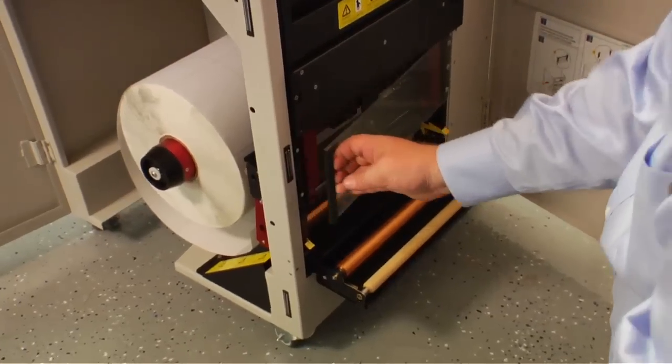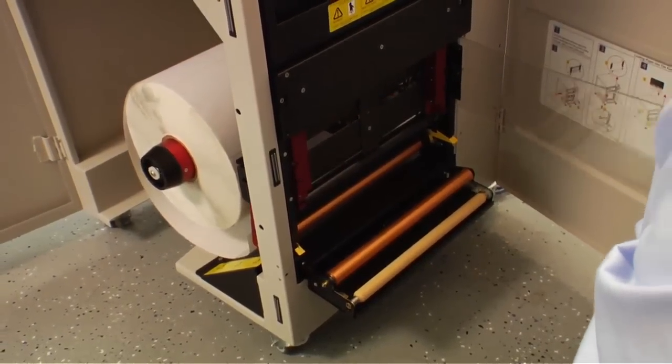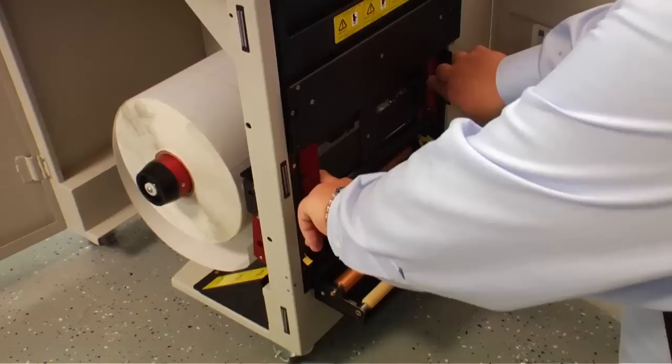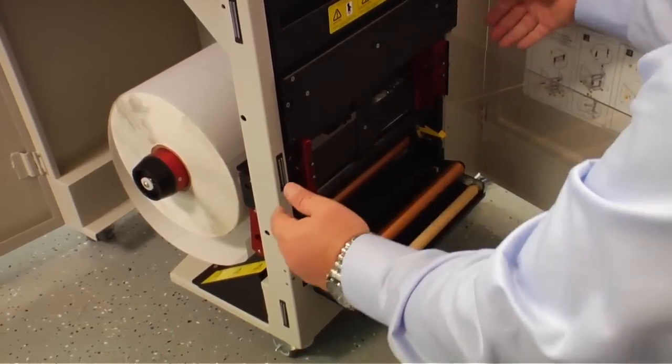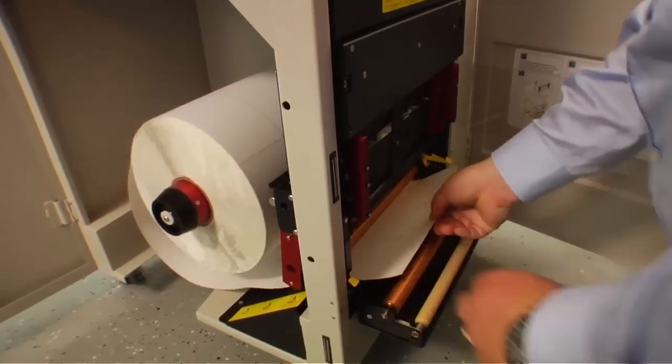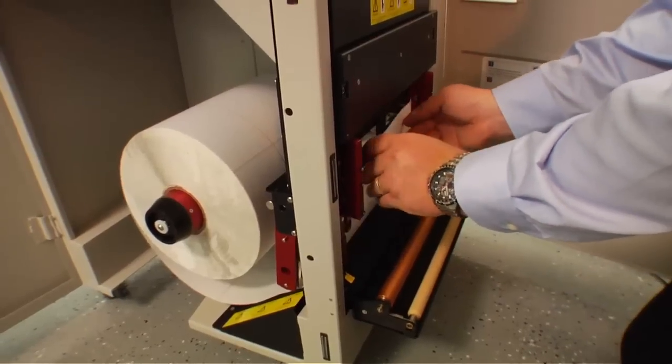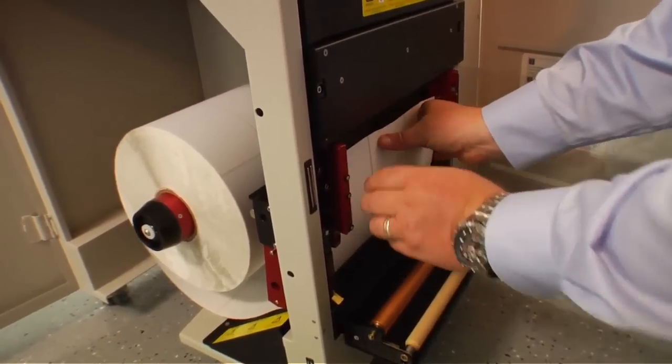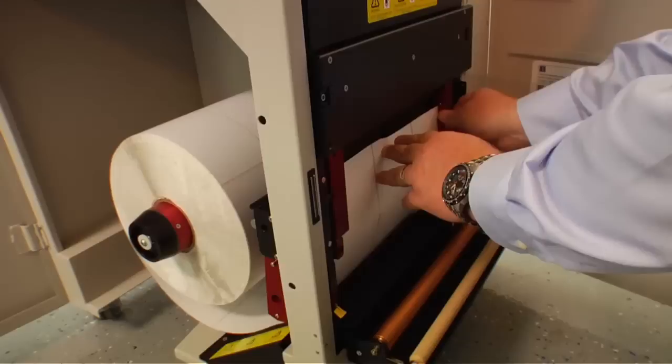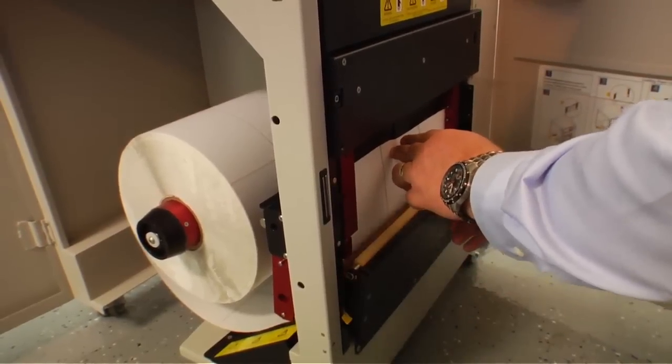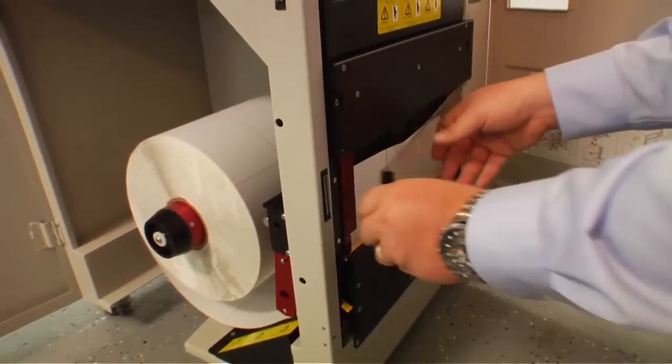Second thing we're going to do is open up the clear panel where the sensors are at. The eyes open outward. We're going to pull the media through the opening and stage it right at the eyes here. Close the eyes and the doors.